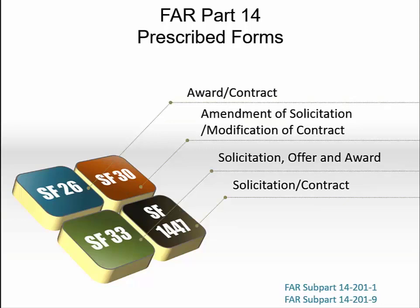Standard Form 1447 is used for soliciting supplies or services and for awarding contracts that result from the bids. It is used when the simplified contract format is used and can be used in place of the Standard Form 26 or the Standard Form 33 with other solicitations and awards.